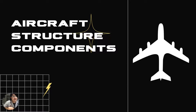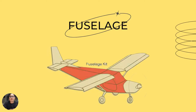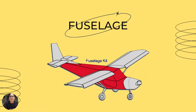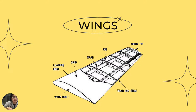Aircraft structure components of most aircraft include five major components. First, the fuselage is used to accommodate crew, passengers, and cargo, and provides the structure for wing and empennage assembly. Second, wings — this part is used to generate lift force to support the aircraft.